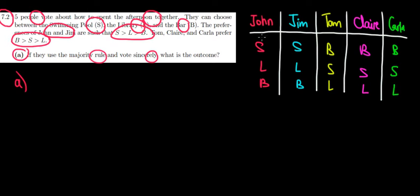Well, John and Jim would vote for S. So we would have two votes for S, and the other three guys would vote for the bar. That's their most preferred option. So we have three votes for the bar, meaning that bar would win with simultaneous voting.